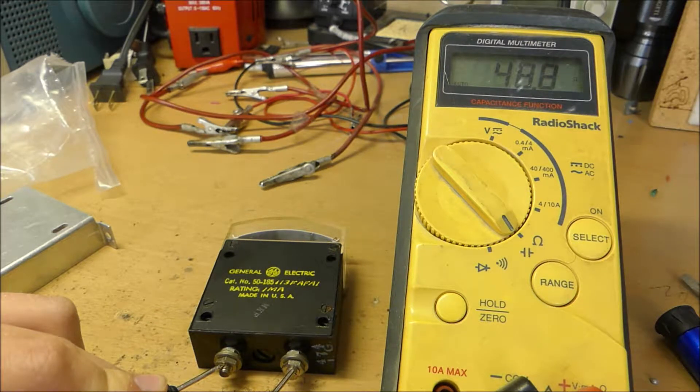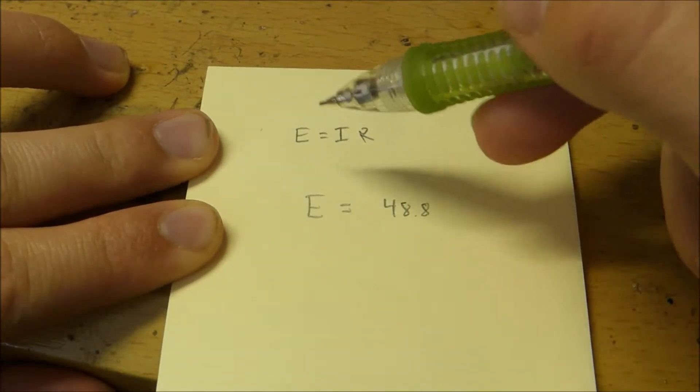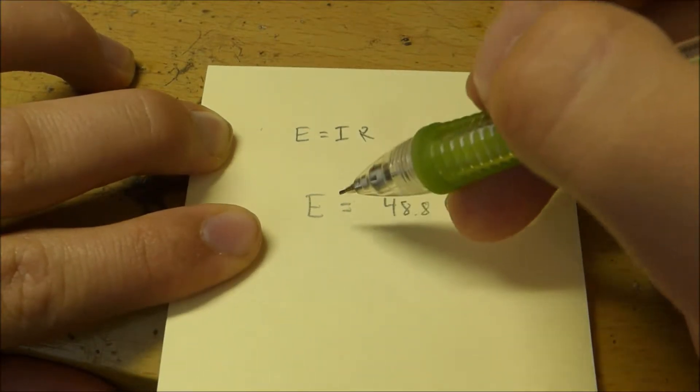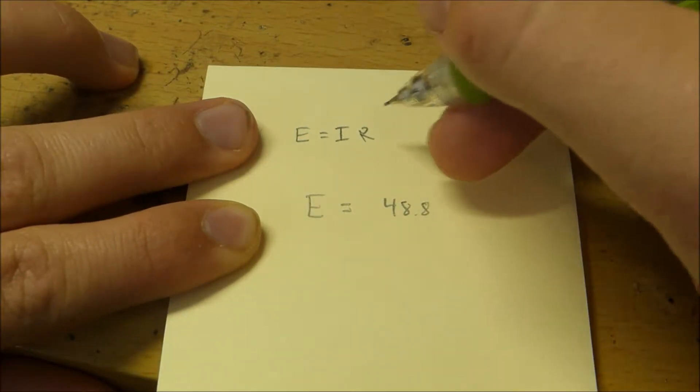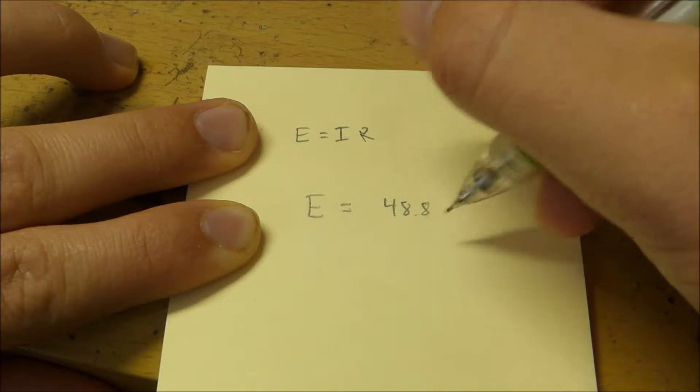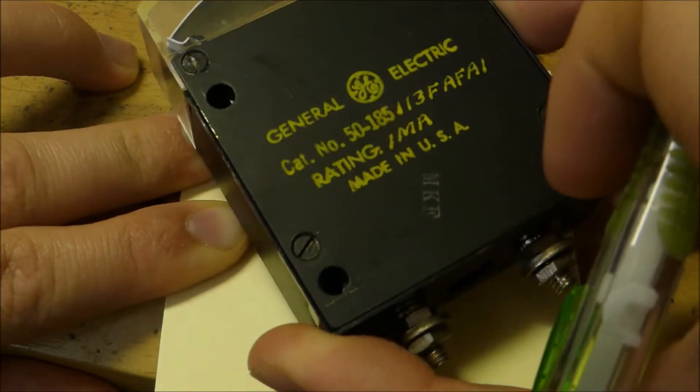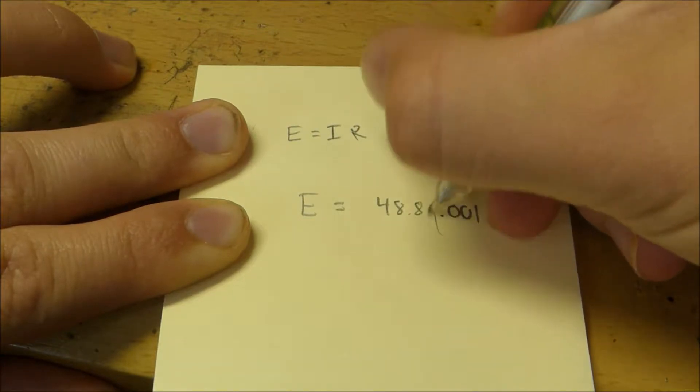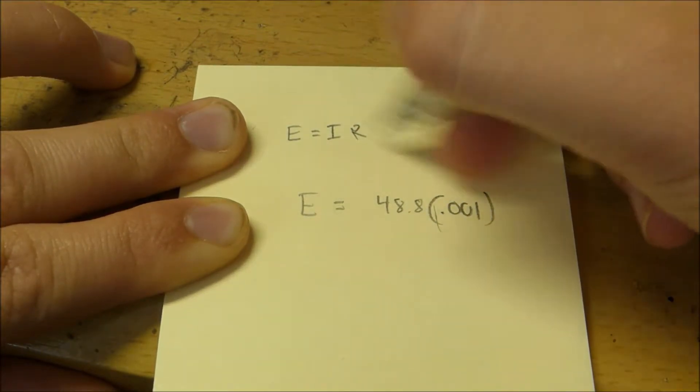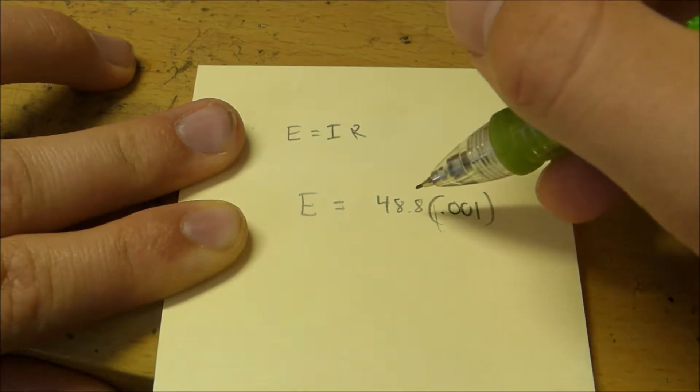Alright, so according to Ohm's law, which is E equals IR, or voltage equals current times resistance, we have E which we don't know, equals R which is 48.8 ohms times I which is current. And the max current for this meter is of course 1 milliamp, which is 0.001 amps, because Ohm's law is all in amps and SI units. So this would be approximately E equals 0.048.